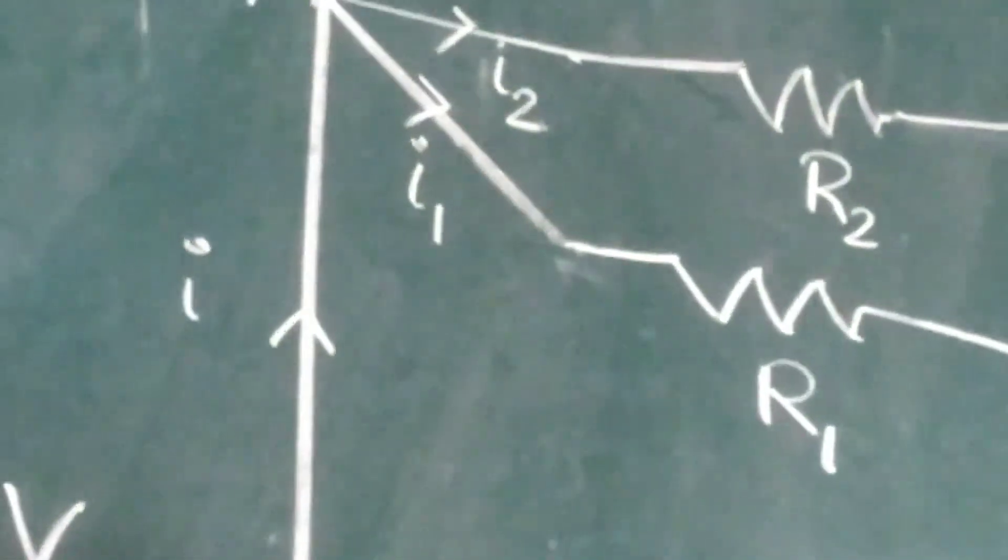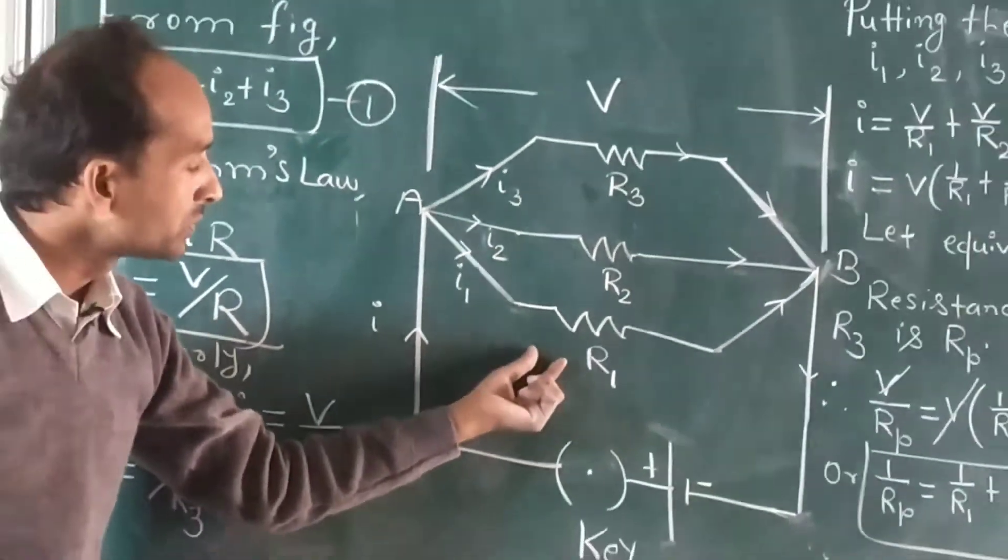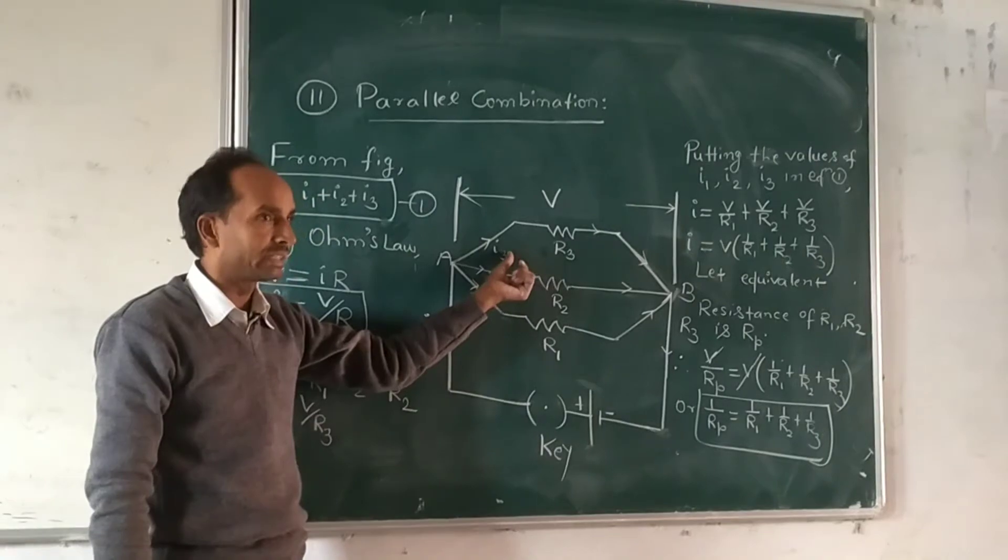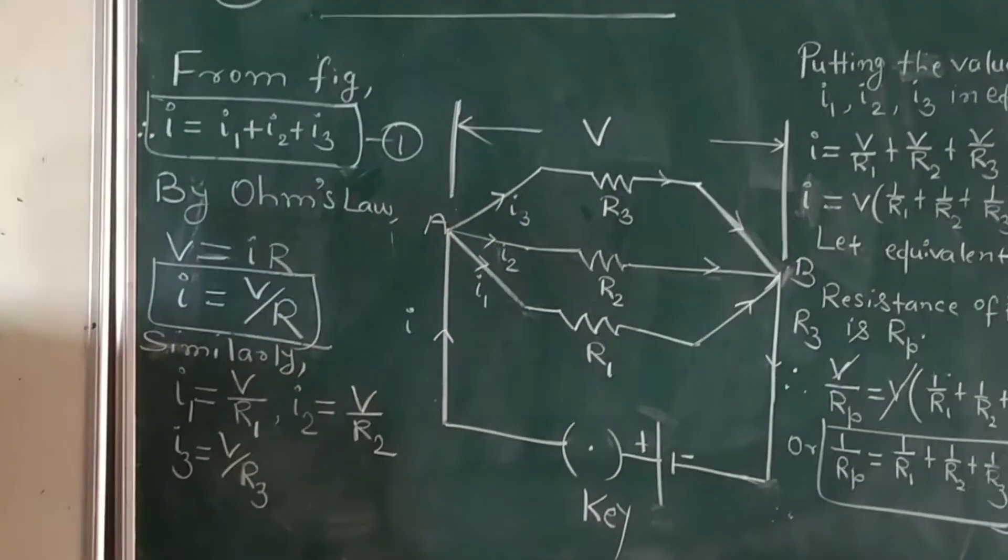We have to find here the current I1, I2, I3 and put all these values in equation one.